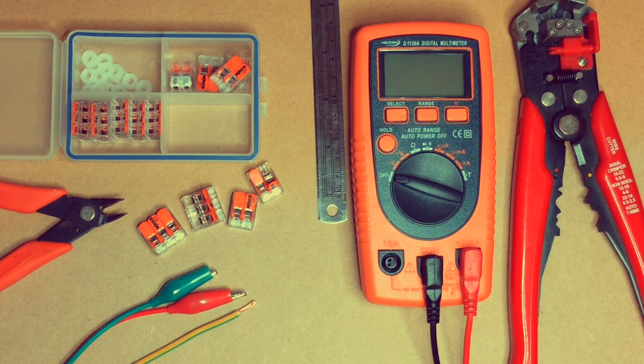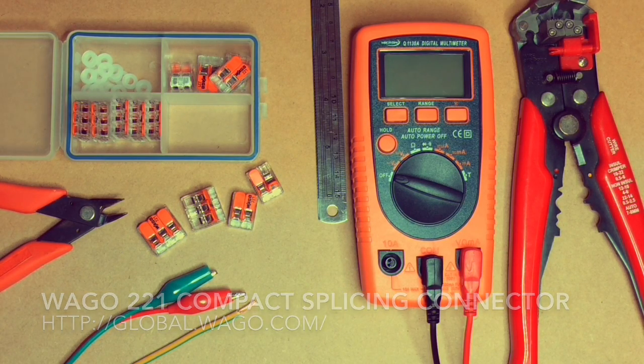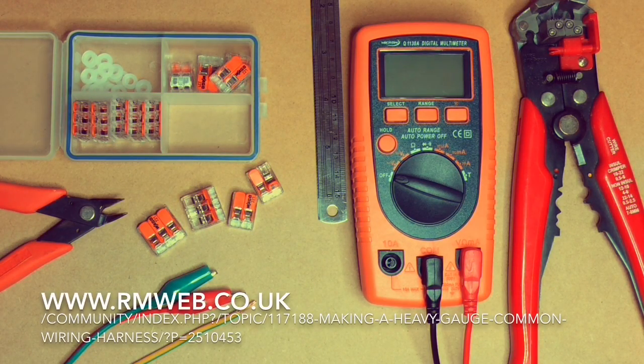Okay, welcome back. It's Digitrax Dad, and tonight I'm going to cover the Wago 221 series of compact splicing connectors. These are the guys here with the orange tabs. This style of connector was pointed out to me on RMWeb, so thanks for that, and I'll post a link to this video on that particular thread.